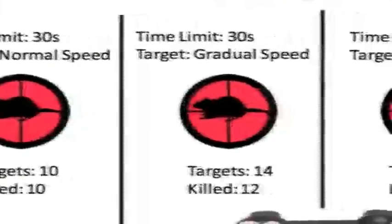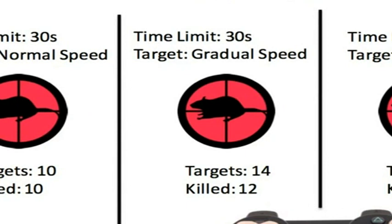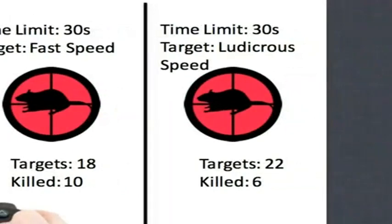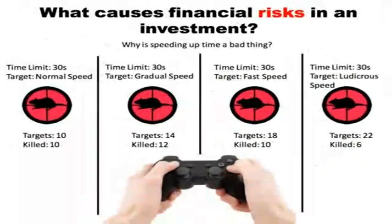As we speed up the speed of the rat but still have 30 seconds to shoot, we actually had 14 targets run across the screen and we were able to shoot 12 of them, which was a little bit better than normal speed. Then as we speed up further, we have 18 rats in 30 seconds and we only killed 10 because the rats are running faster and it's harder to shoot. At ludicrous speed, we have 22 rats in 30 seconds but we were only able to kill six.